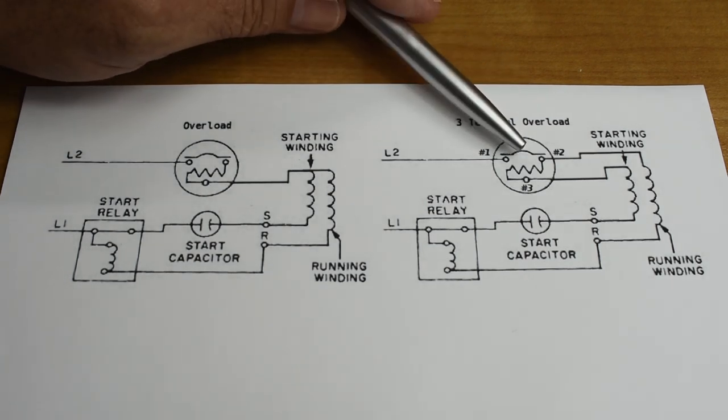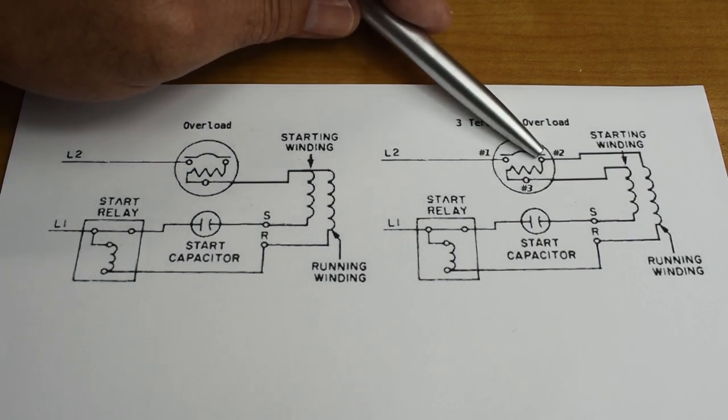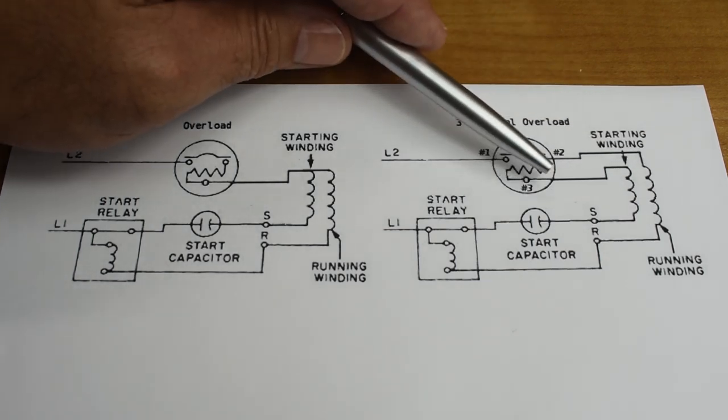Over here, the only difference is you don't have both windings connected together after the resistive element. The run winding is connected at this point here, and the start is connected there.